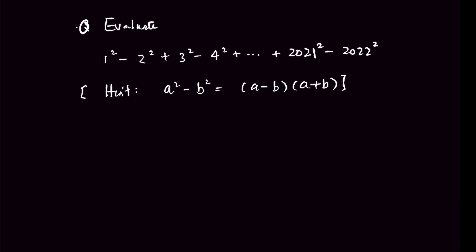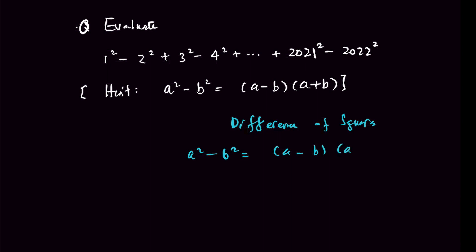Evaluate: 1² − 2² + 3² − 4² + ⋯ + 2021² − 2022². We must understand where this topic comes from — it comes from the difference of squares: a² − b² = (a − b)(a + b).